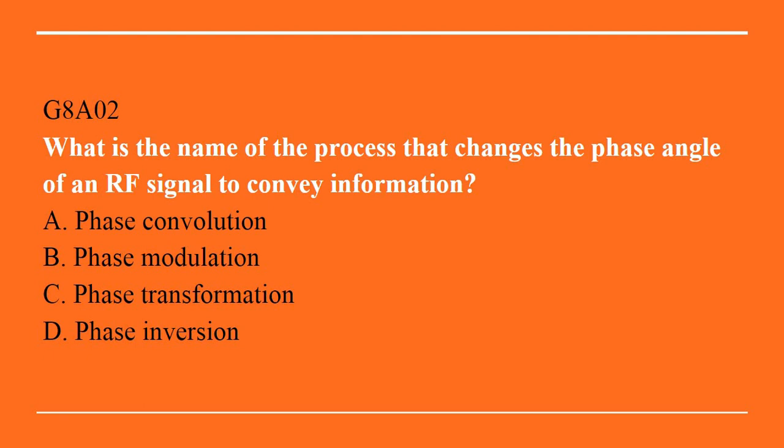G8A02: What is the name of the process that changes the phase angle of an RF signal to convey information? A. Phase convolution. B. Phase modulation. C. Phase transformation. D. Phase inversion. Answer is B. Phase modulation.